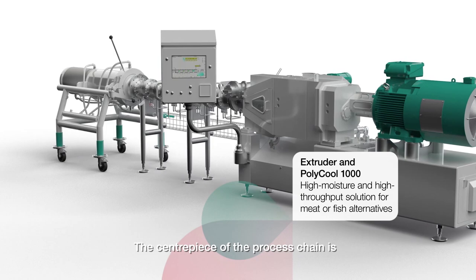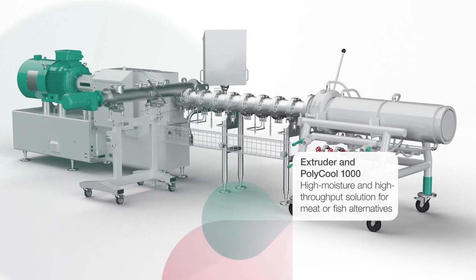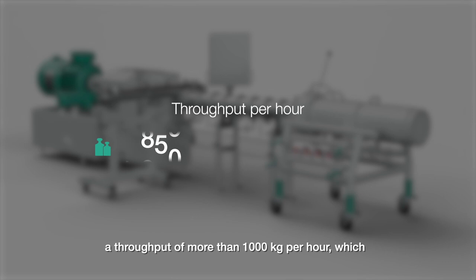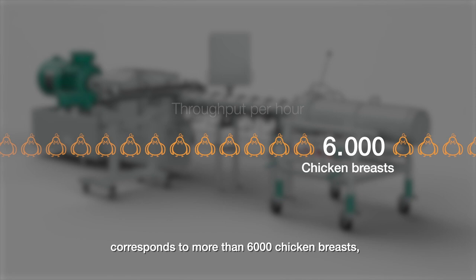The centerpiece of the process chain is the extruder with the attached cooling die Polycool 1000. The patented cooling die allows for the first time a throughput of more than 1,000 kilograms per hour which corresponds to more than 6,000 chicken breasts, plant-based of course.